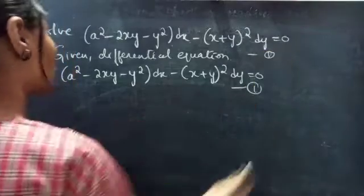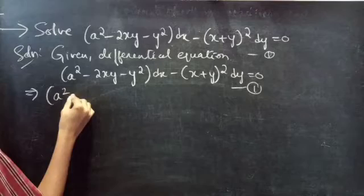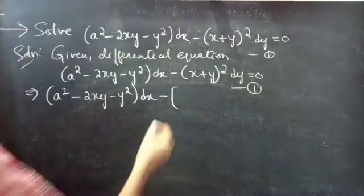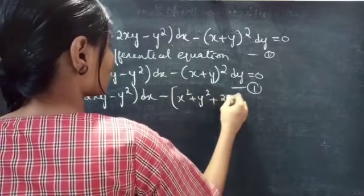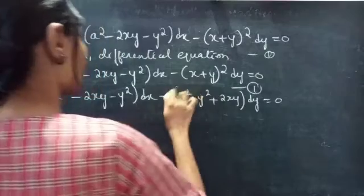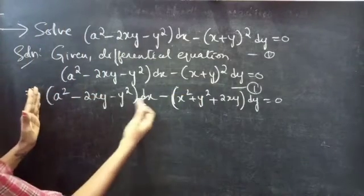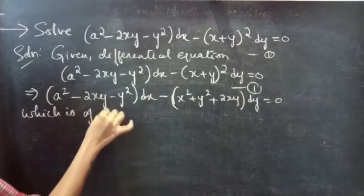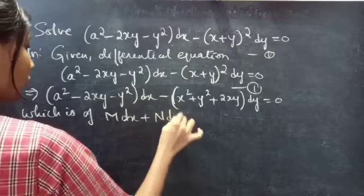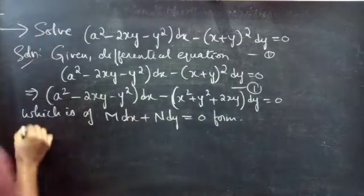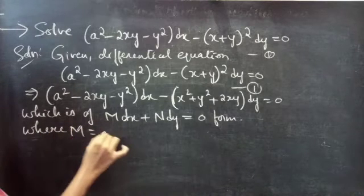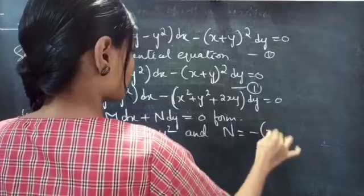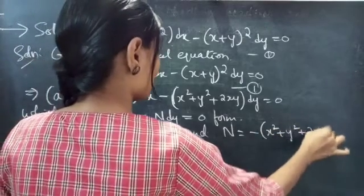Consider this as equation 1. You can rewrite it as x square minus 2xy minus y square into dx minus x square plus y square plus 2xy into dy equals to 0, which is of the form M dx plus N dy equals to 0, where M equals to x square minus 2xy minus y square and N equals to minus of x square plus y square plus 2xy.